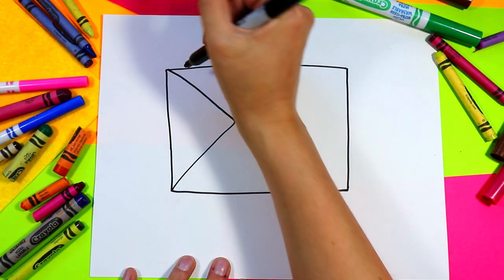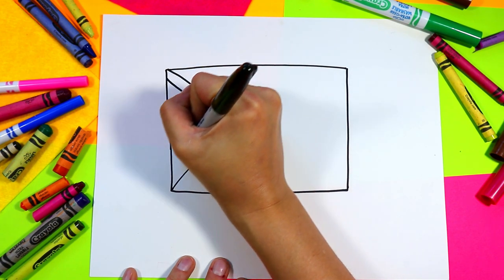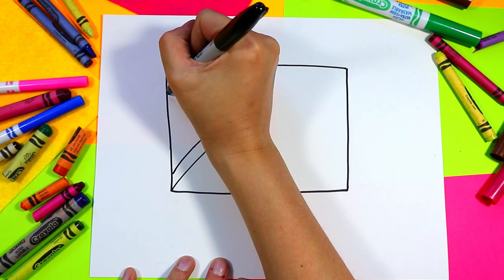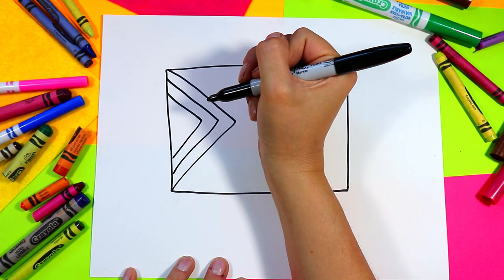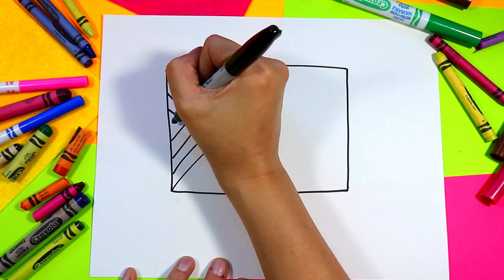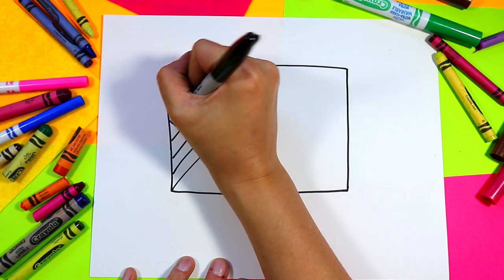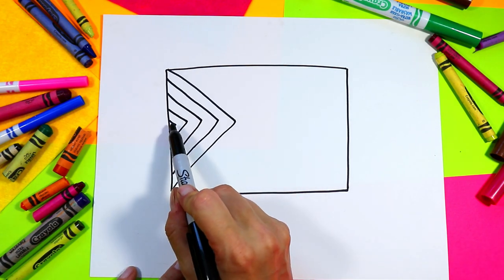Next we're gonna be adding some stripes. So first we're gonna be doing a black stripe. Next we'll add another stripe for the brown stripe. We'll draw a stripe for the blue one and one more, and that will be for pink and white.